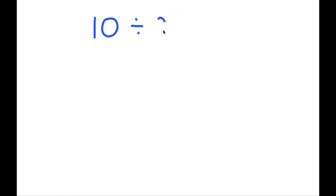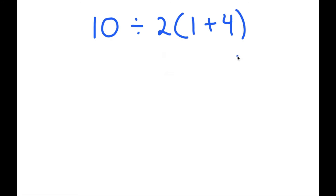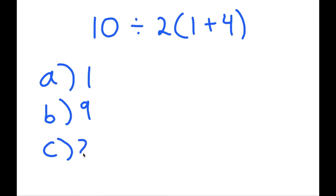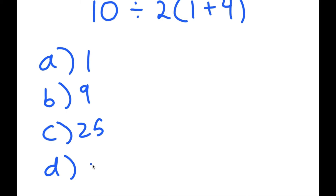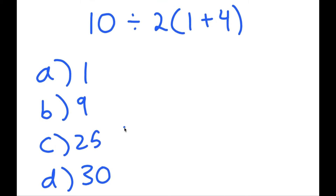In this video, I'm going to solve an expression that many people get wrong, which is actually very simple: 10 divided by 2 times 1 plus 4. For those who want to solve it, there are four answer choices: A is 1, B is 9, C is 25, and D is 30. You can pause the video to solve this.